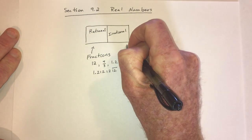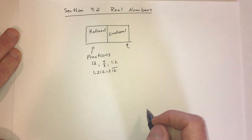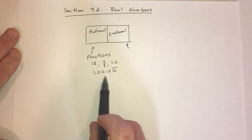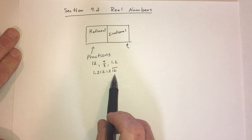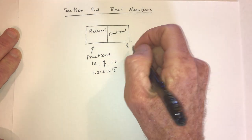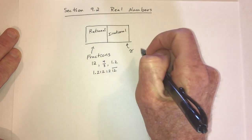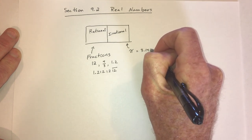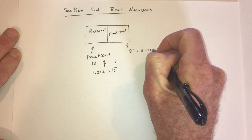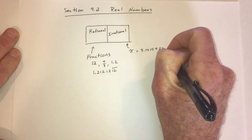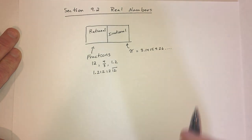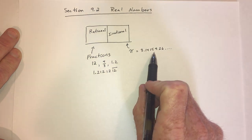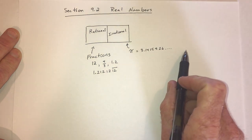Irrational is everything else. That means it's going to have a decimal, but it's not going to have a pattern. One very famous one is pi: 3.1415926, etc. There is no pattern here, and it just keeps going forever.